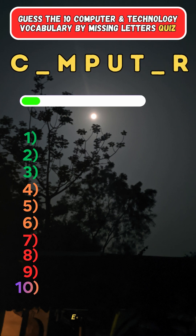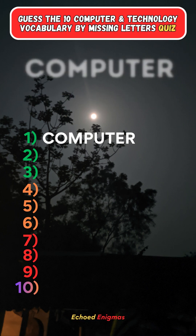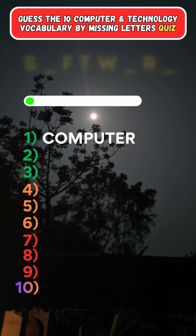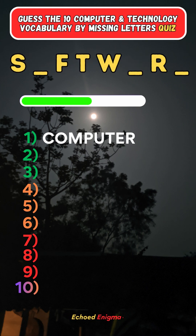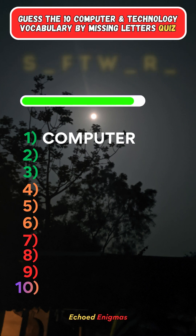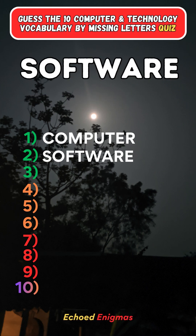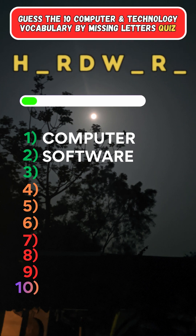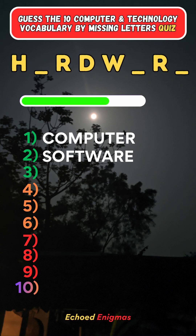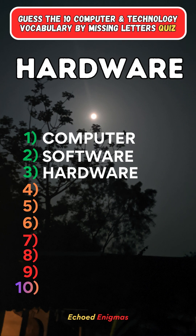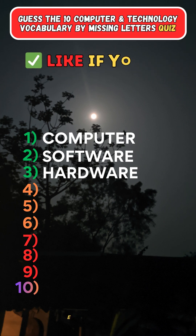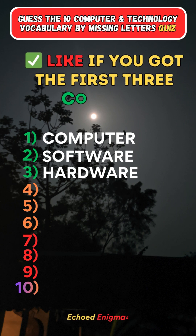First one: Computer. Second one: Software. Third one: Hardware. Like the video if you answered the first three correct.